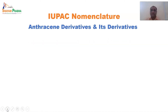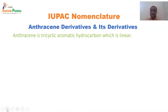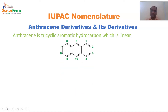Anthracene is a tricyclic aromatic hydrocarbon which is linear. In the earlier session, we saw naphthalene was bicyclic; the only difference between anthracene and naphthalene is that anthracene is tricyclic and naphthalene is bicyclic, and both are linear in nature. The numbering for anthracene starts from the alpha position, then beta, then gamma. The numbering goes from alpha through carbon 4, then skipping the second ring, going to the third ring: 5, 6, 7, 8, 9, and 10 — this is the IUPAC numbering.